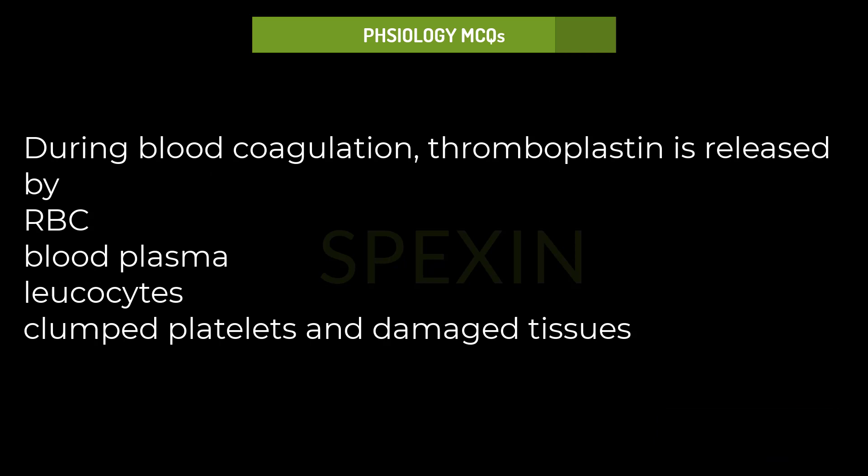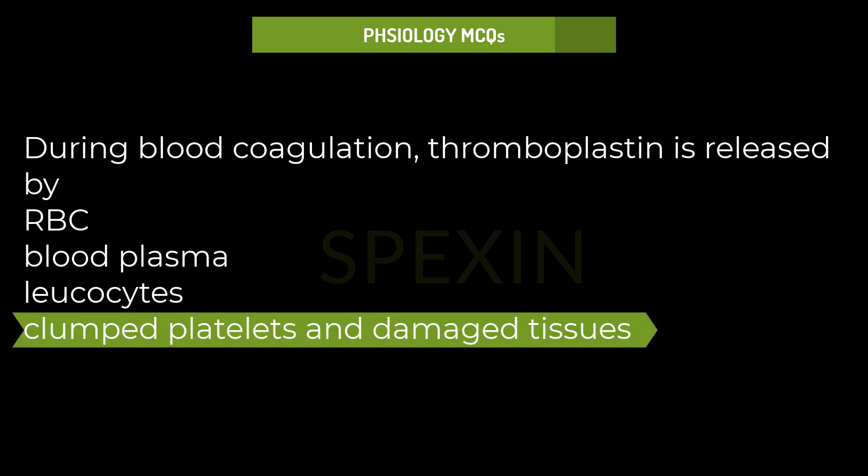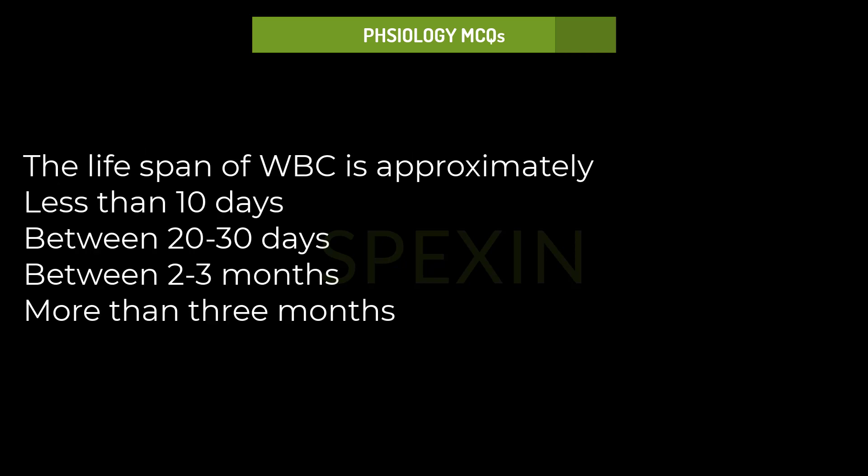During blood coagulation, thromboplastin is released by: RBC, Blood plasma, Leukocytes, Clumped platelets and damaged tissues. Correct answer: Clumped platelets and damaged tissues.